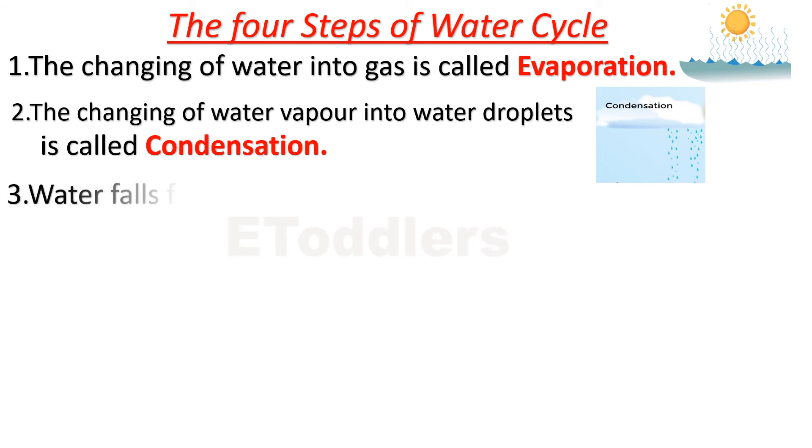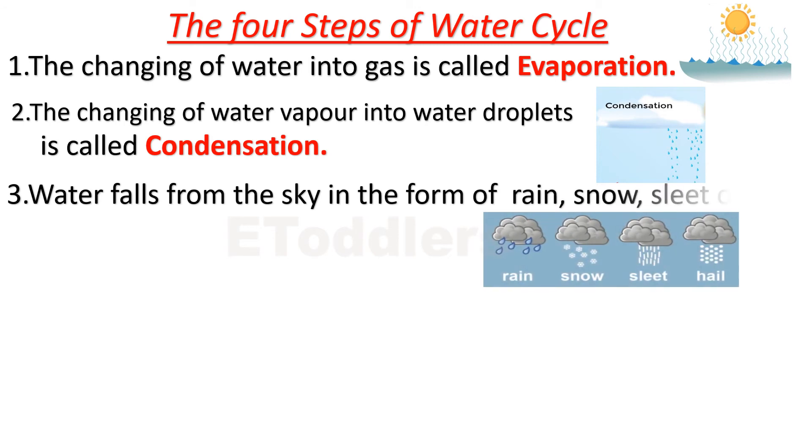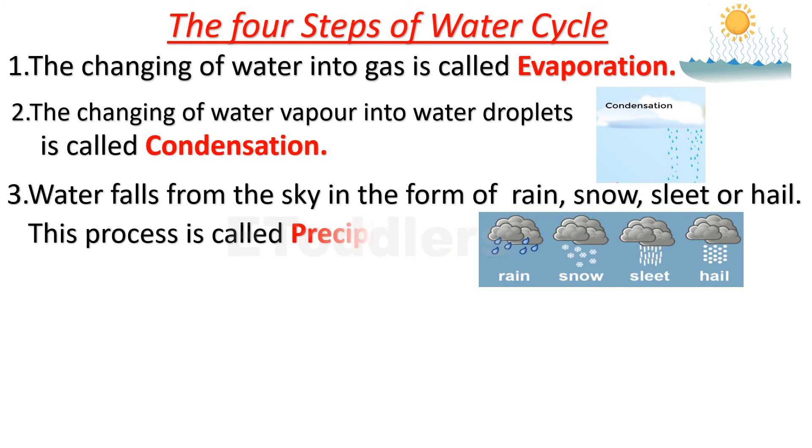Water falls from the sky in the form of rain, snow, sleet or hail. This process is called precipitation.